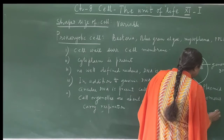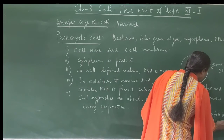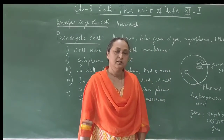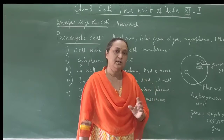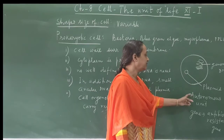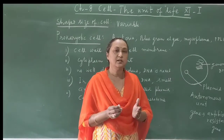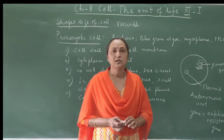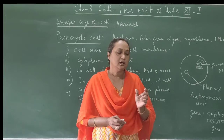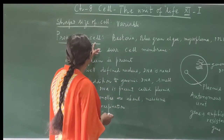These plasmids carry some genes which have specific characters, for example antibiotic resistance genes. A bacterium which does not have plasmids is not resistant to a particular antibiotic, for example ampicillin. But a bacterium that has the plasmid carrying the antibiotic resistance gene for ampicillin is resistant to ampicillin. So plasmids are small circular DNA found in the cytoplasm, they are autonomous units that can replicate themselves, and they carry important genes which can express to produce specific characters.